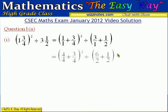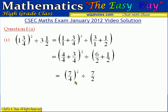Now that the denominators are the same, we can add the numerators and put back the common denominator. On the other side, we add the numerator 6 and 1 and put back the common denominator which is 2. This term is now squared, so the square means we have to square the 7 and also square the 4, giving us 49 divided by 16, and we are still dividing by 7 over 2.